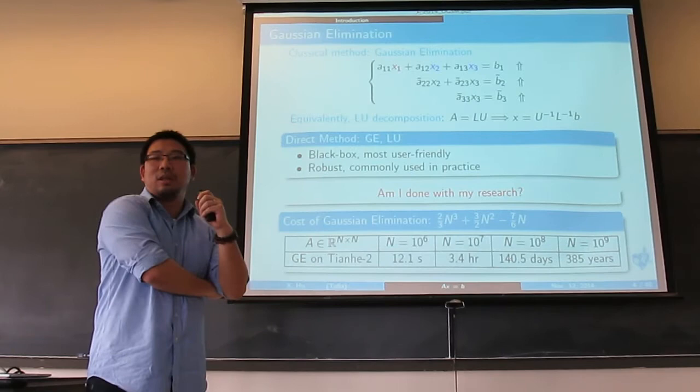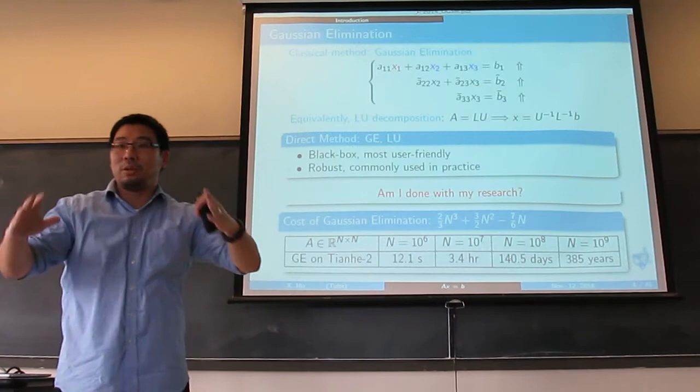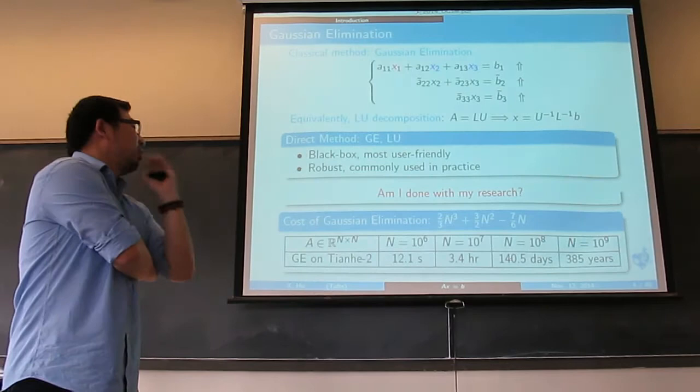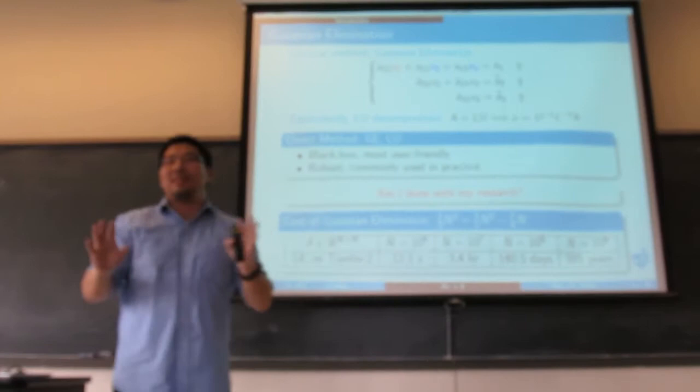When we go to 1 billion, it's more than 1 billion seconds. Even if you use the biggest computer, a dense 1 billion matrix takes more than 1 year to solve. Sorry — it's 300 years. That's how long it takes.